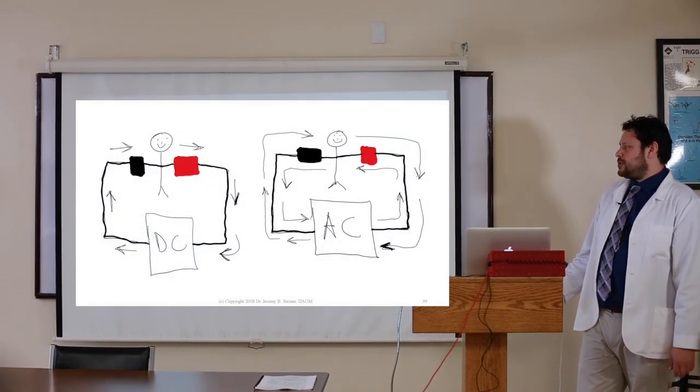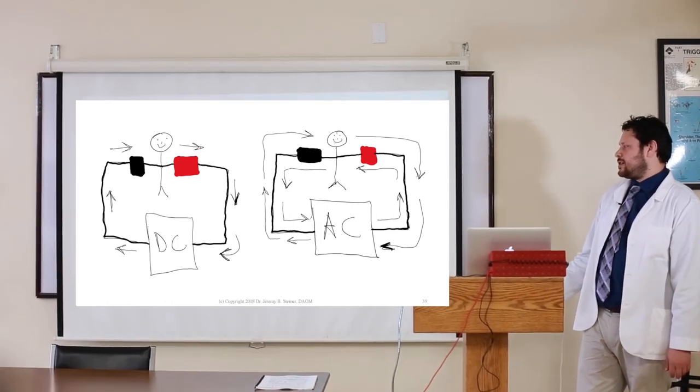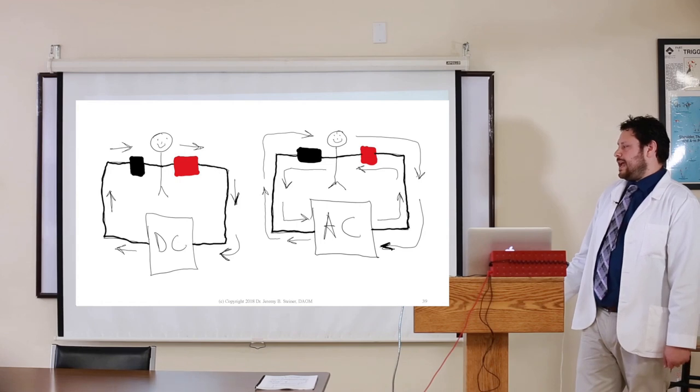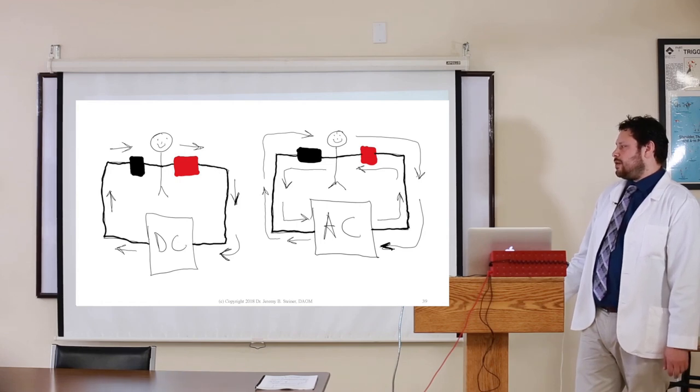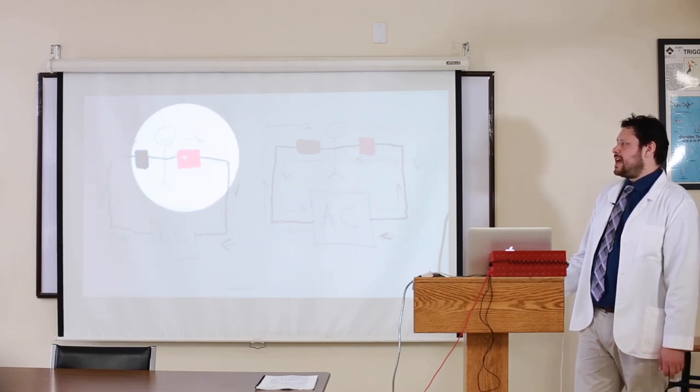This is our e-stim machine. Actually, our e-stim machine is alternating current, but there are machines that do direct current. This is the flow of electrons coming out of the black side into the patient, leaving the patient out the red side and going back into the machine.